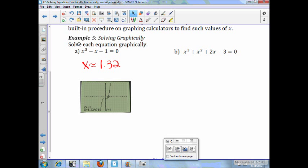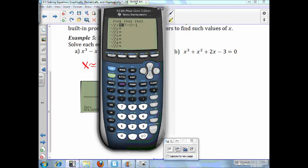Now, again, for b, we'll put this equation. x to the third plus x squared plus 2x minus 3. Again, it looks like there's only one zero. There's your answer at about 0.84.